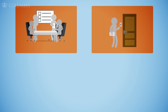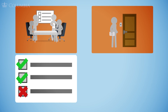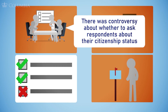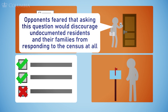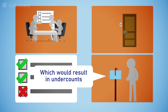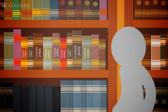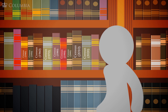For example, the U.S. Census is generally considered an authoritative source on demographics and population numbers in the United States, but many factors affect the accuracy of census data, including which questions are included, how answer options are phrased, and the way in which answers are collected. For the 2020 census, there was controversy about whether to ask respondents about their citizenship status. Opponents feared that asking this question would discourage undocumented residents and their families from responding to the census at all, which would result in undercounts. Ultimately, this question was not asked in 2020. Additionally, census questions and methodology can change from census to census, which can make comparing data over the decades challenging. Researchers must be careful to understand the different census datasets before making any comparisons.